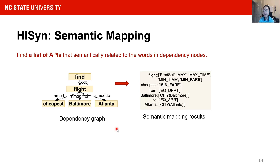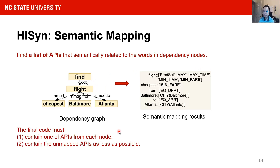The first step of the back-end is semantic mapping, which aims to find all the APIs that are related to the key information inside the query. For each node on the dependency graph, HySing finds a list of APIs whose descriptions are semantically related to the word inside the node. After finding all related APIs, the code we want to generate must meet two conditions. First, it must contain one API from each node, because the code needs to cover all the key information. Second, it must contain as few unmapped APIs as possible, because it should cover unmentioned information as little as possible.